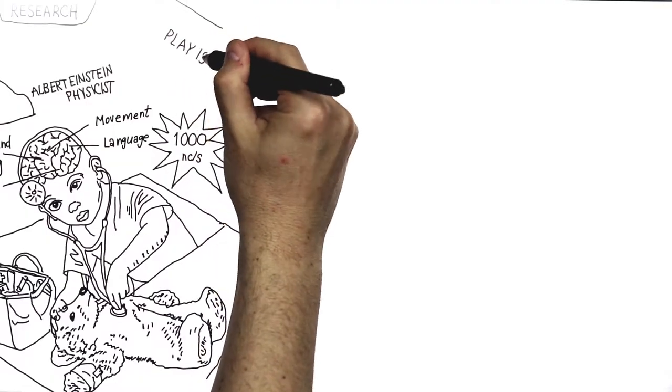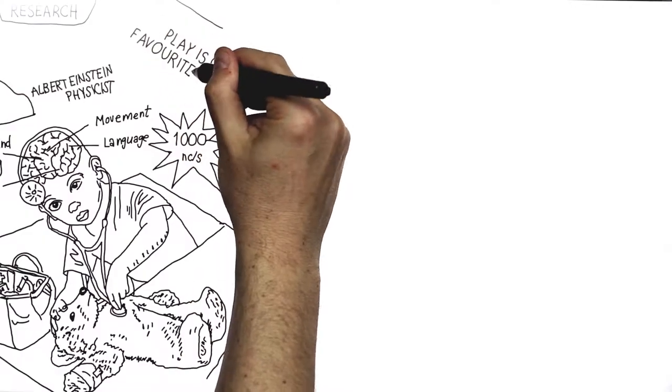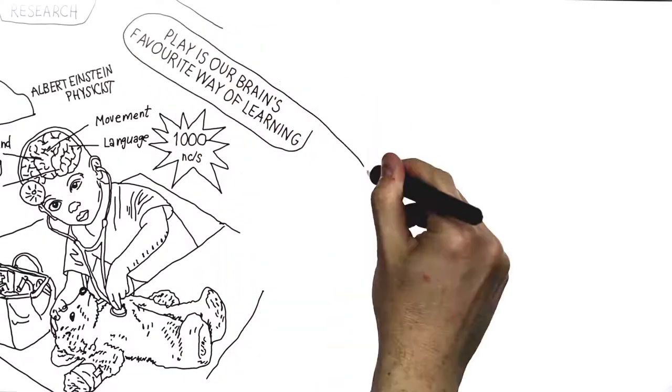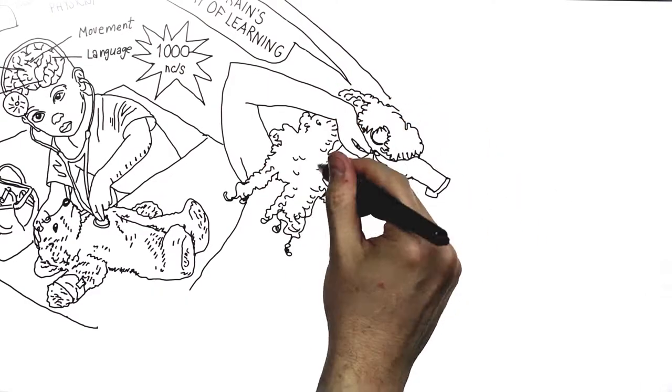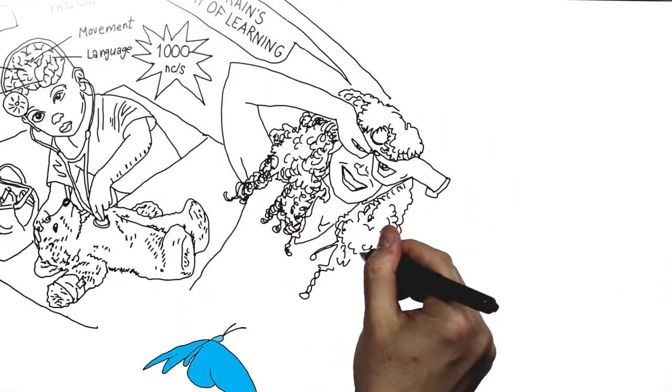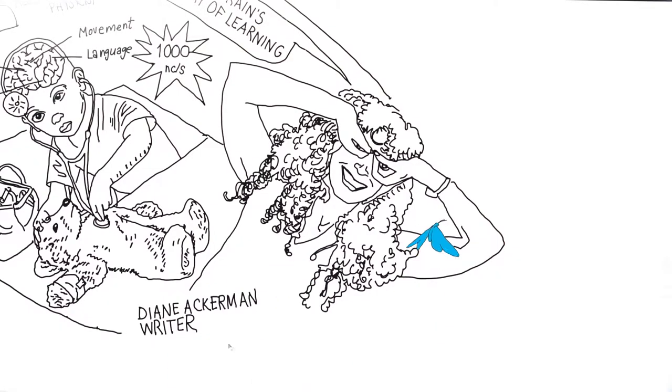Diana Ackerman reminds us that play is our brain's favorite way of learning. Play is a critical form of stimulation that boosts children's cognitive, physical, social and emotional development from the start.